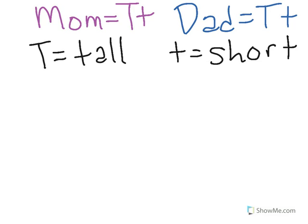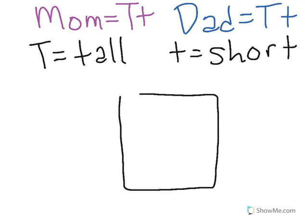When making a Punnett square, the first thing you have to do is draw a 2x2 grid if you're looking at one trait. In this case, we're looking at the height of pea plants.